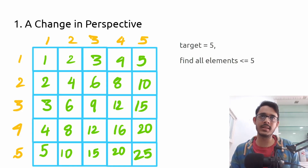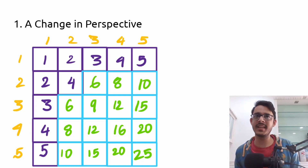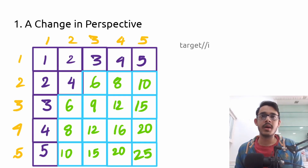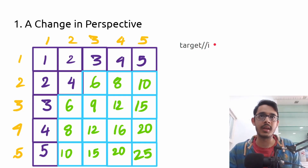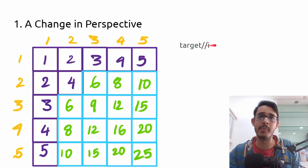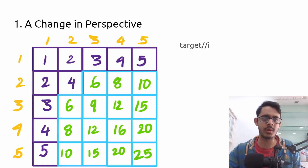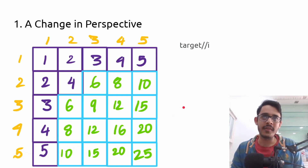There's a key mathematical observation: the number of elements in row i that are less than or equal to target is just floor(target / i). For target=5 and row 1, that's 5 — all elements qualify. For row 2, it's floor(5/2)=2. Similarly for rows 3, 4, and 5. This observation is critical and we'll use it in the solution.